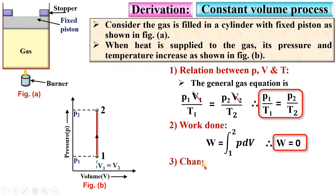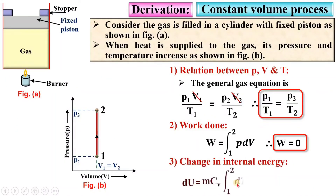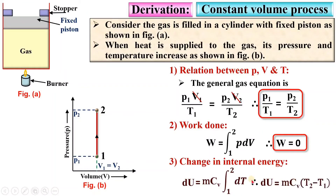Next, change in internal energy. This is always equal to mCv dT, where dT is the change in temperature during the process. So du = mCv(T2 − T1).